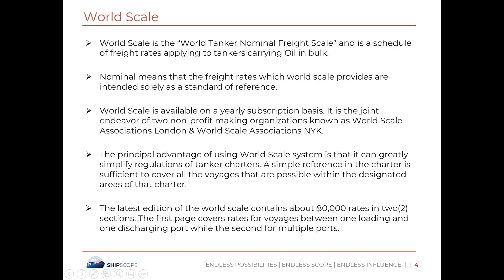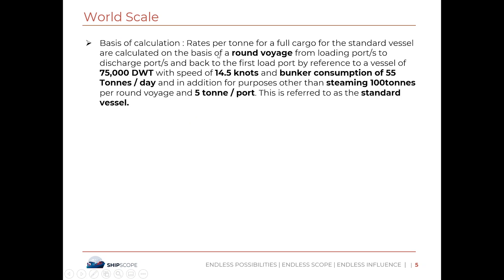A simple reference in the charter is sufficient to cover all voyages possible within the designated aim of that charter. The latest edition of the World Scale contains about 80,000 rates in two sections: the first covers rates for voyages between one load port and one discharge port, while the second covers multiple ports. Rates per tonne are for a full cargo for a standard vessel, calculated on the basis of the round voyage — load port, discharge port, and back to the load port — for a vessel of 75,000 deadweight tonnage with a speed of 14.5 knots and bunker consumption of 55 tons per day, plus 100 tons per voyage and 5 tons per port.